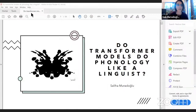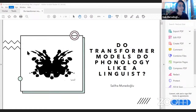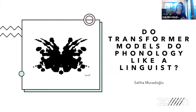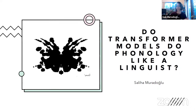Thank you. Thanks everyone for joining. I know we're all bombarded with a lot of stuff going on live, so it's nice to have you with us today. I'm going to talk to you about basically a small section of my research on whether transformers actually — transformer models — actually do phonology like a linguist. I threw up the picture of a Rorschach test because essentially we're trying to see what kind of pattern or what categories or generalizations the transformer models make.